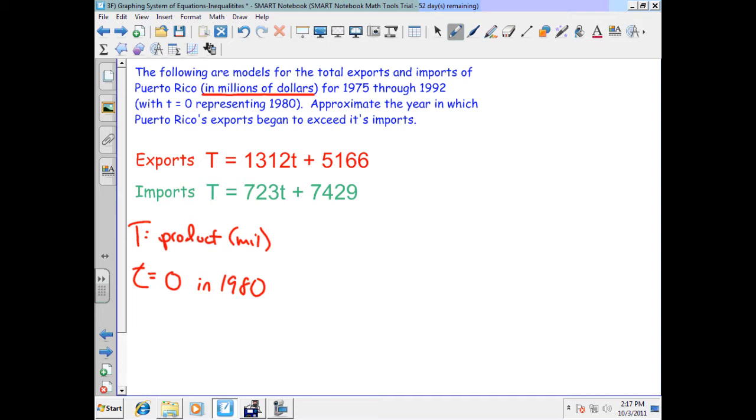Approximately what year did Puerto Rico's exports begin to exceed the imports? In other words, at what time did the two lines cross and imports and exports balance each other out? We could get the graph paper, but we're in the thousands and so forth here.